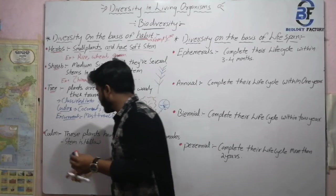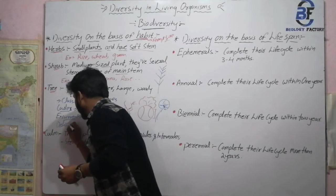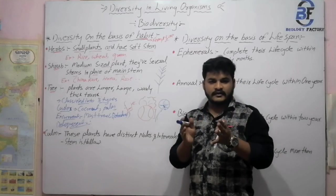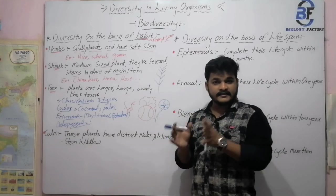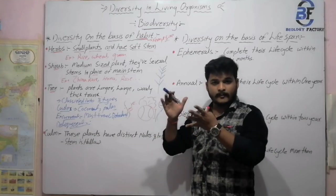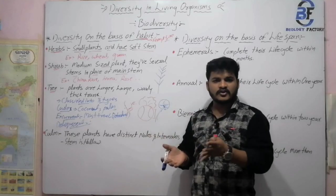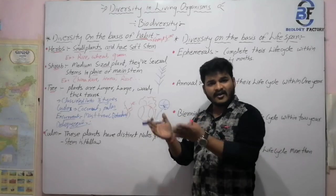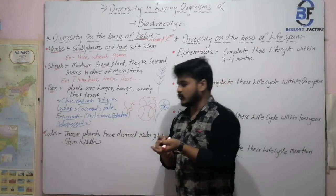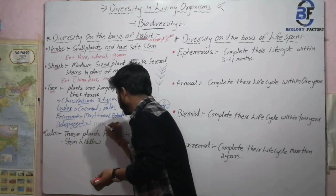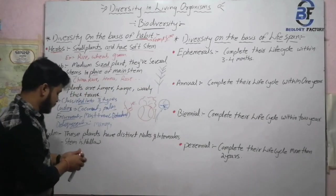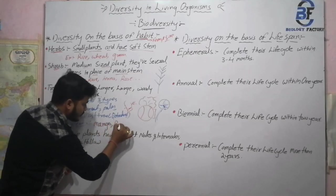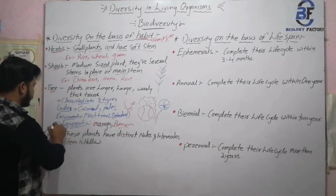The last type of tree is deliquescent. In deliquescent, the tree trunk is big and large, and the middle structure of the plant is divided into a number of branches. Examples include mango plant, jackfruit plant, and banyan tree — all come under deliquescent. So mango and banyan tree are common examples of deliquescent.